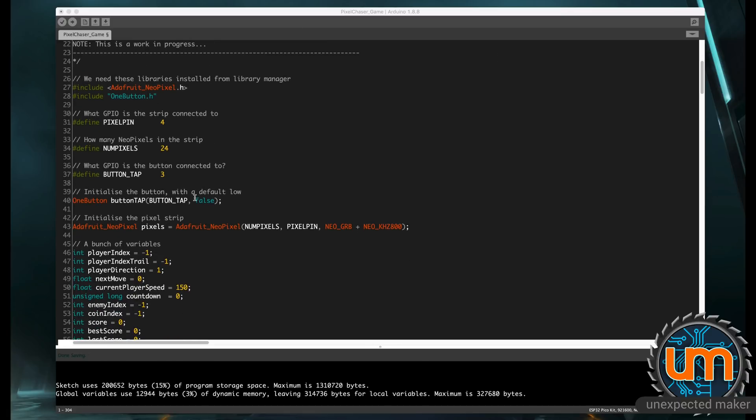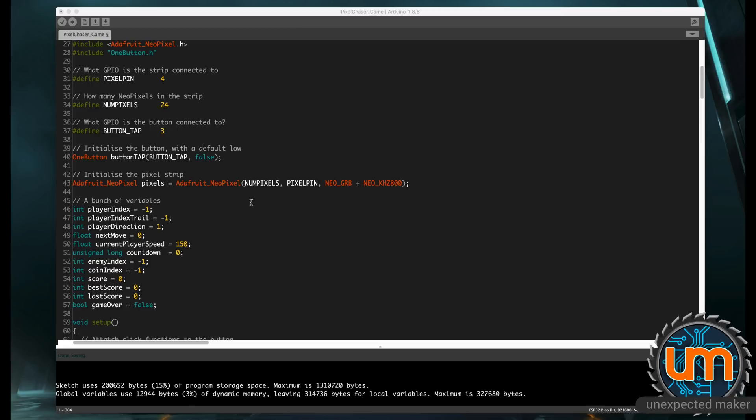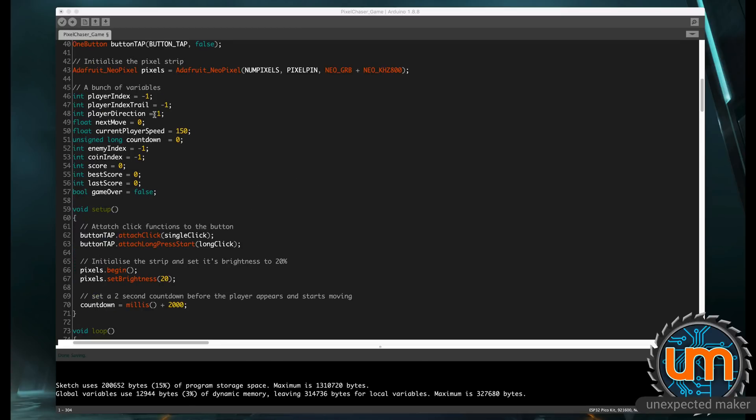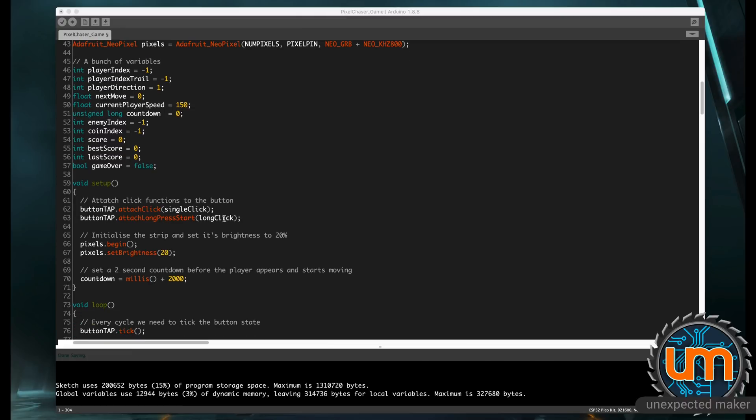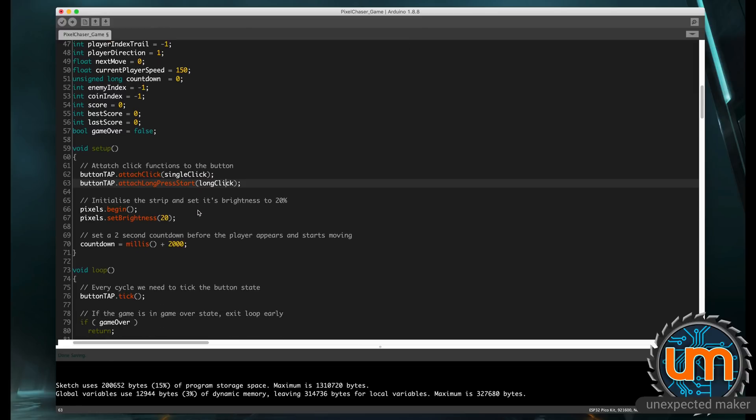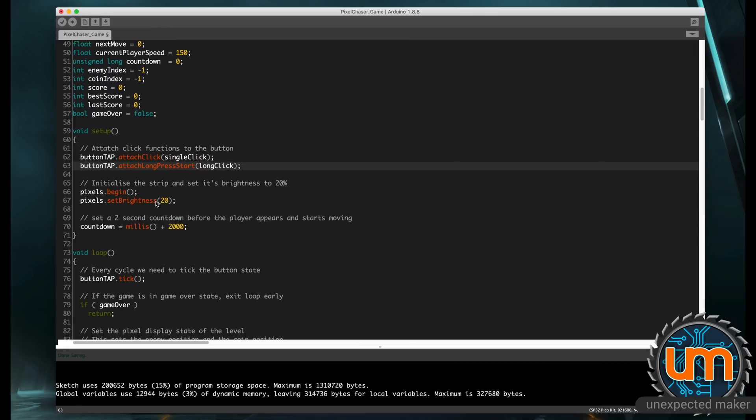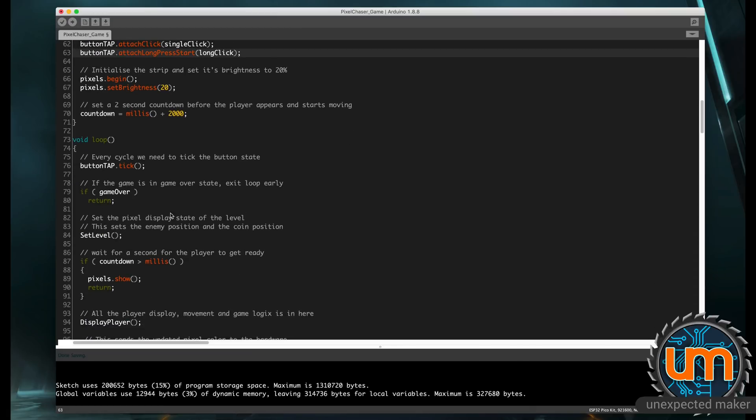We're just setting up the pins for the pixels and the buttons, initializing the number of pixels. There's a whole bunch of variables here. I'm not going to go through and explain what each one is. It's pretty straightforward once you look through the code down below. I'm assigning a single click and a long click to the button, turning on the pixels, setting their brightness to 20. You can make them as bright as you want, but obviously the brighter they are, the more power they take.